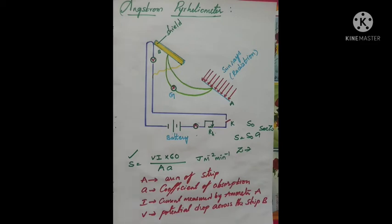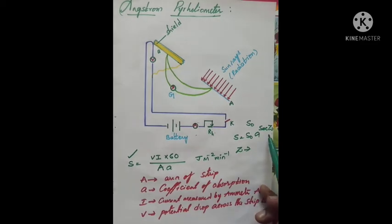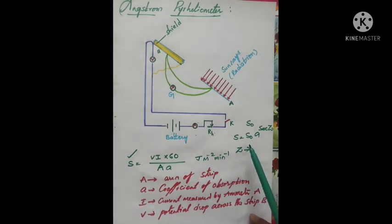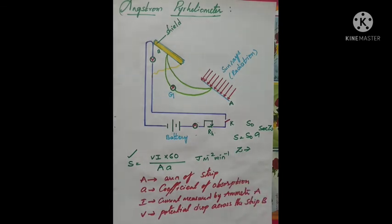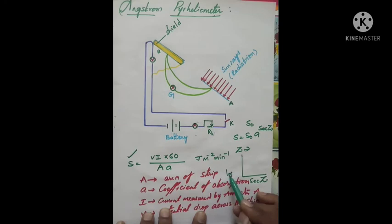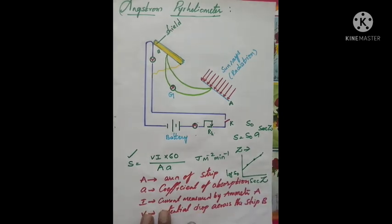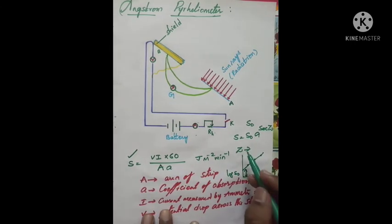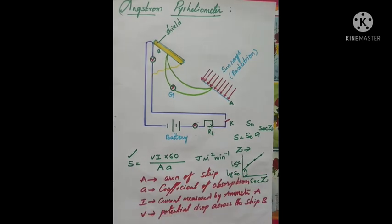In this formula, a is the coefficient of absorption, z is the zenith distance of the sun, S₀ is the actual solar constant, and S is the observed solar constant. A graph is plotted with sec z on the x-axis and log S on the y-axis, from which log S₀ can be read off as the y-intercept.